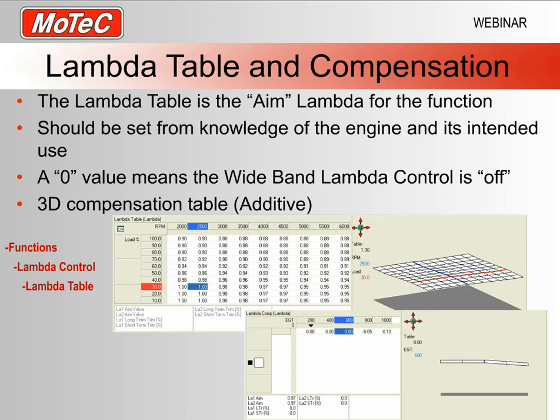The lambda table is your aim value — this is what you want the lambda control function to control to. The table is based on load and RPM. You put in what lambda value you want at, say, 6000 revs and 80% throttle, and as that changes the lambda control function will simply try to follow it. Realistically, those should be the lambdas you tuned to on the dyno, so the trimming from this wideband lambda control should only be fairly small.